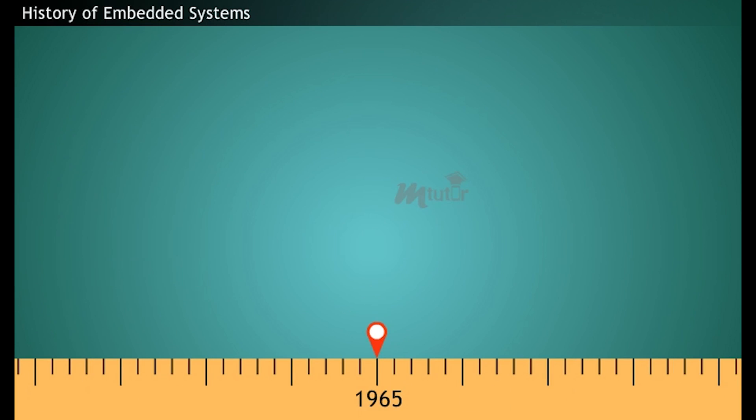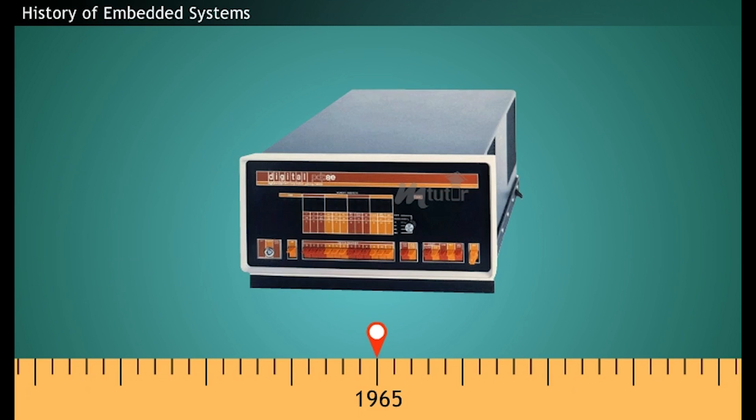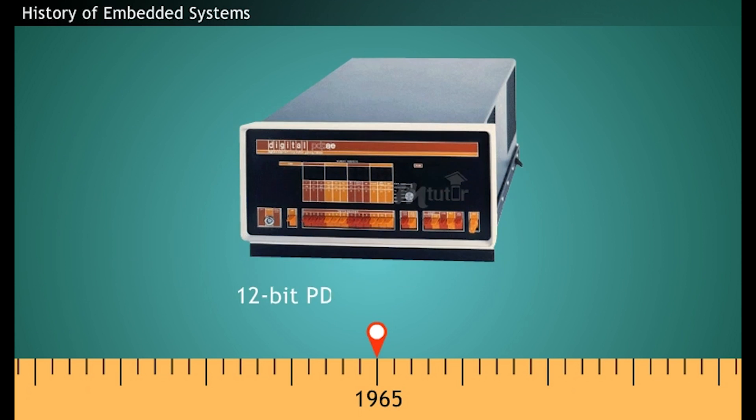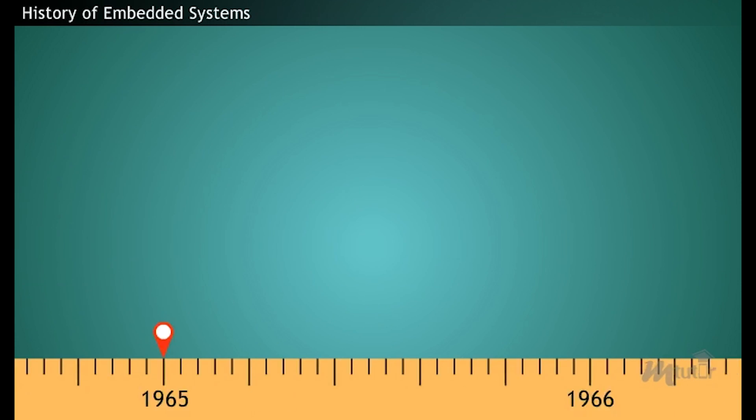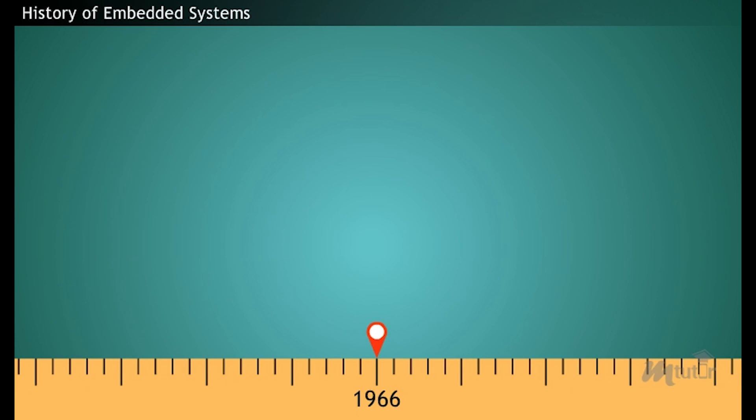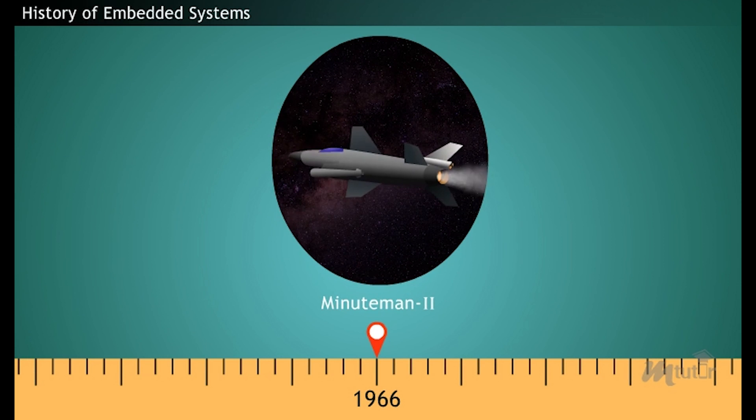In 1965, the first computer embedded in a commercial instrument was launched. It was a 12-bit PDP-8 mini-computer. Consequently, in 1966, the Minuteman Missile 2 went on prediction. This came up with several major technical advancements in the Autonetix.